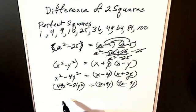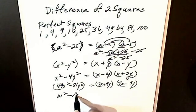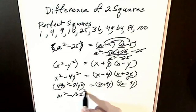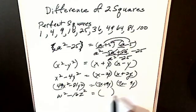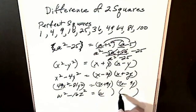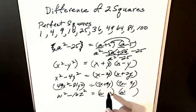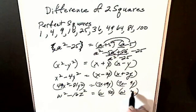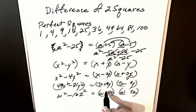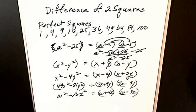We'll do one more. Let's say I have w squared minus 16z squared. I have difference of two squares, so I have w, w, I have 4z, 4z, one is plus, one is minus. That's it. That's how we factor difference of two squares.